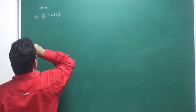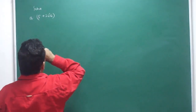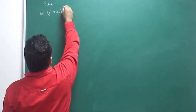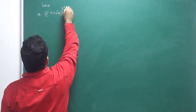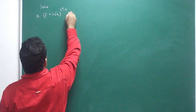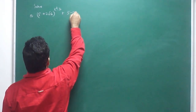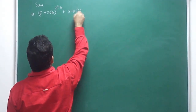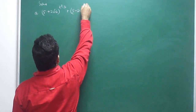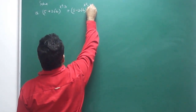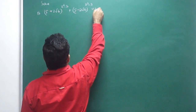The roots of the equation: (5 + 2√6) to the power (x² − 3) plus (5 − 2√6) to the power (x² − 3) is equal to 10.